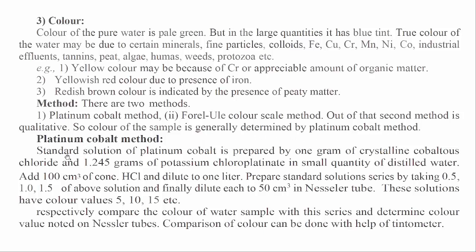Platinum-cobalt method: A standard solution is prepared by dissolving 1 gram of crystalline cobaltous chloride and 1.245 grams of potassium chloroplatinate in a small quantity of distilled water. Add 100 cm³ of concentrated HCl and dilute to 1 litre. Prepare a standard solution series by taking 0.5, 1.0, 1.5 mL of the above solution and dilute each to 50 cm³ in Nessler tubes. These solutions have color values of 5, 10, 15, etc., respectively. Compare the color of the water sample with the series and determine the color value noted on the Nessler tubes. Comparison of color can be done with the help of a tintometer.